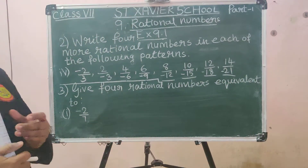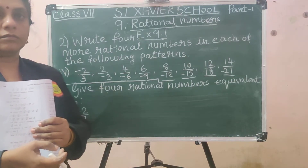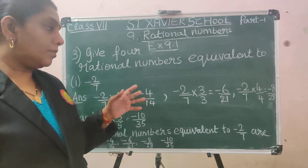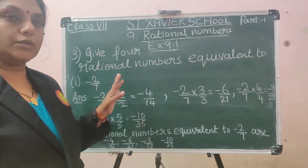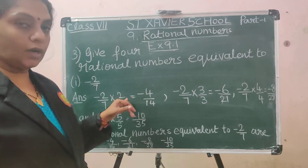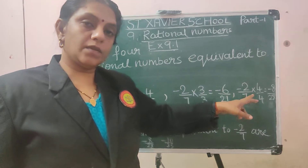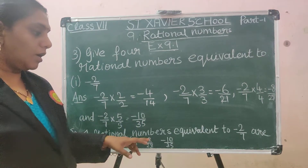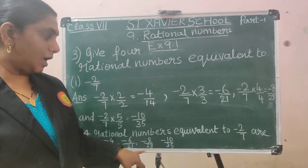Question 3: Give 4 rational numbers equivalent to minus 2 by 7. For equivalent fractions, multiply both numerator and denominator by the same number. Multiplying by 2: minus 4 by 14; by 3: minus 6 by 21; by 4: minus 8 by 28; by 5: minus 10 by 35. So four rational numbers equivalent to minus 2 by 7 are: minus 4 by 14, minus 6 by 21, minus 8 by 28, and minus 10 by 35.